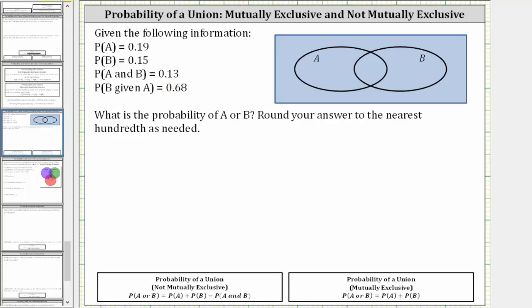We are given the following information and asked to determine the probability of A or B. And we will find this probability two ways.